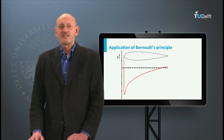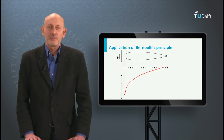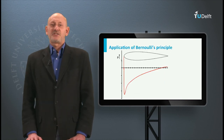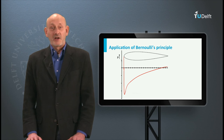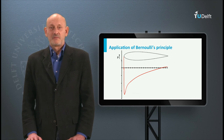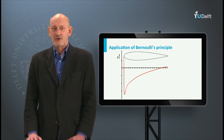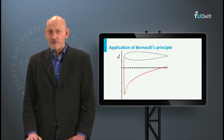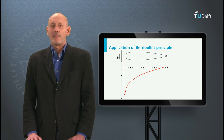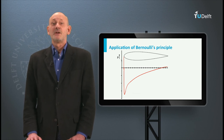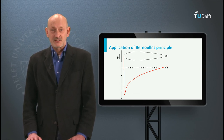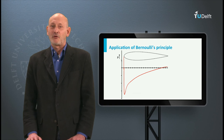One of the applications of Bernoulli's principle is the pressure distribution on an airfoil. Since the pressure is constant perpendicular to the airfoil surface, by measuring the pressure distribution you can derive the velocity at some distance around the airfoil.